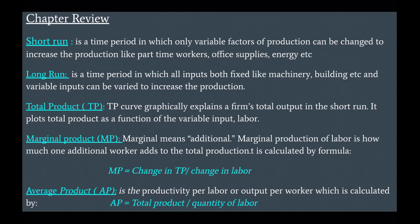Chapter review: Short run is a time period in which only variable factors of production can be changed to increase production, like part-time workers, office supplies, energy, etc. Long run is a time period in which all inputs — both fixed inputs like machinery and buildings, and variable inputs — can be varied to increase production.